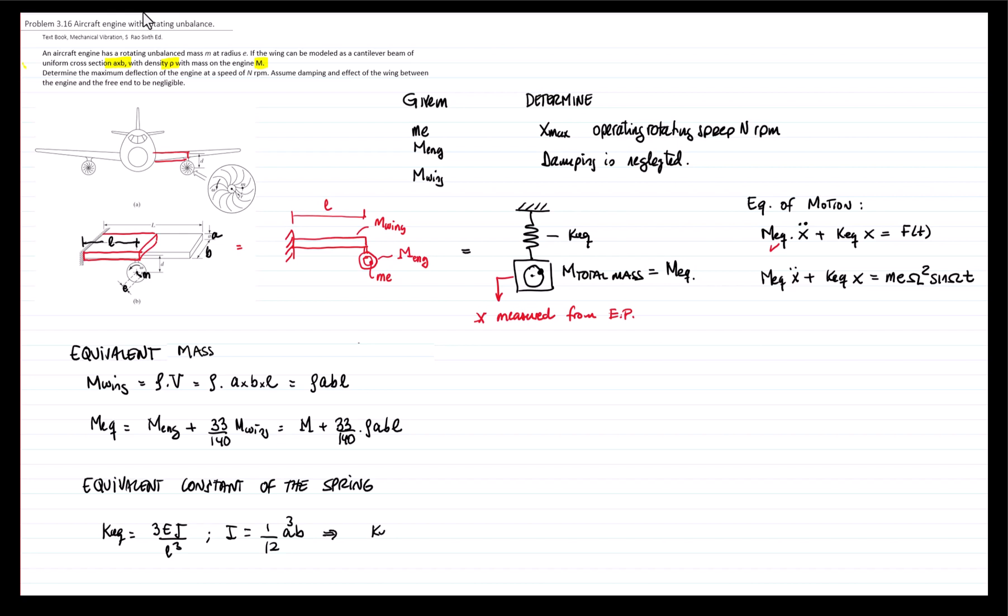Therefore, my equivalent constant of the spring will be 3EI over 12L cubed. If this is the equation of motion, the response of the system is equal to ME omega squared divided by the equivalent constant times the magnification factor sine omega t minus a phase angle. The magnification factor is defined as 1 over the square root of 1 minus r squared squared plus 2 zeta r squared. However, we have no damping, therefore this term is equal to 0, and the magnification factor is equal to 1 over the absolute value of 1 minus r squared.